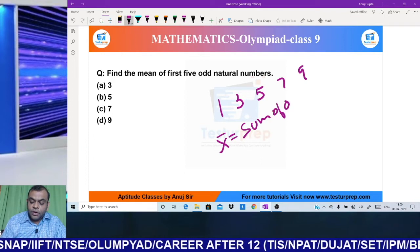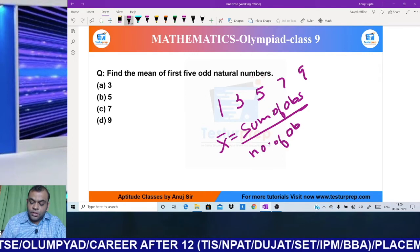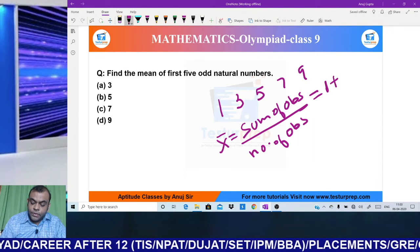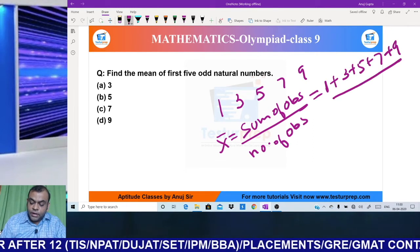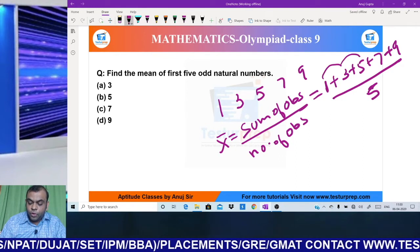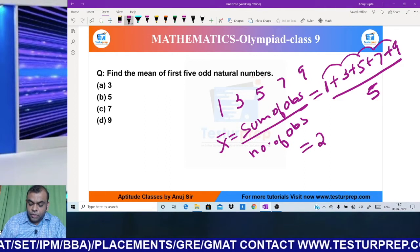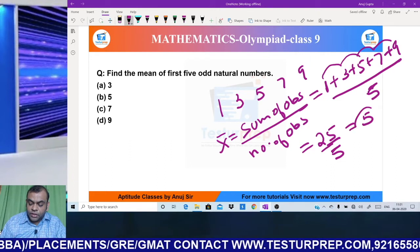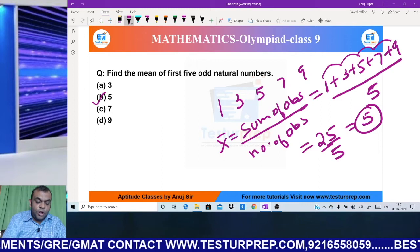Average formula is sum of observations divided by number of observations. So (1+3+5+7+9) ÷ 5. 1+3=4, 4+5=9, 9+7=16, 16+9=25. So 25 ÷ 5 = 5. My answer is 5, which is option B.